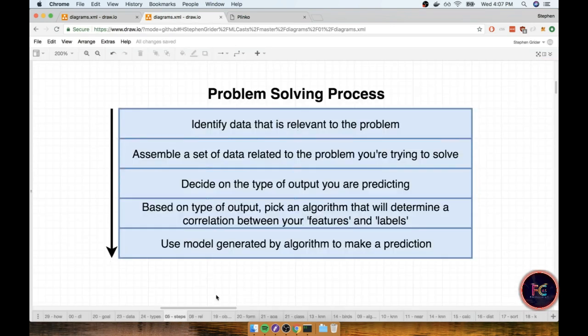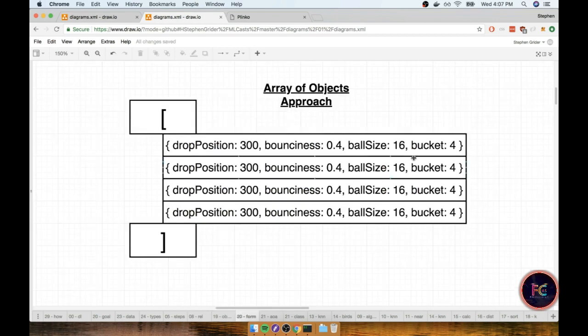In the world of JavaScript for maintaining datasets there's really two distinct approaches that we can take. The first is to record all these different ball drops or all these different observations as we might call them inside of a single array. And inside that single array we might have a single object. And this single object would record information about that single ball drop attempt.